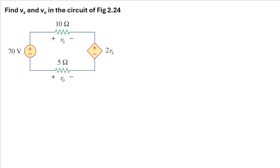Hello, my name is RD and we are going to solve this problem. The question is: find Vx and V0 in the circuit of this figure. We have an independent source of 70 volts and a dependent voltage source with the value of 2Vx.